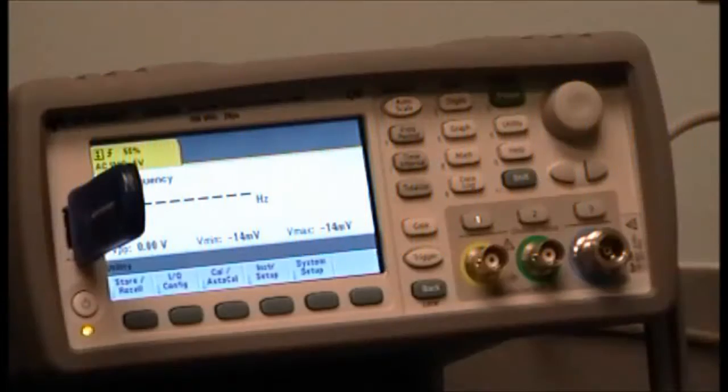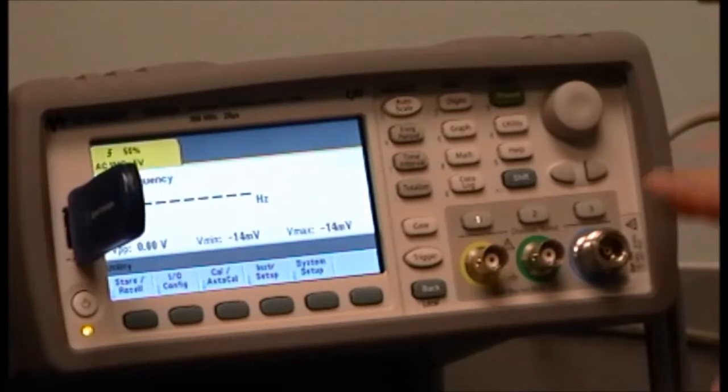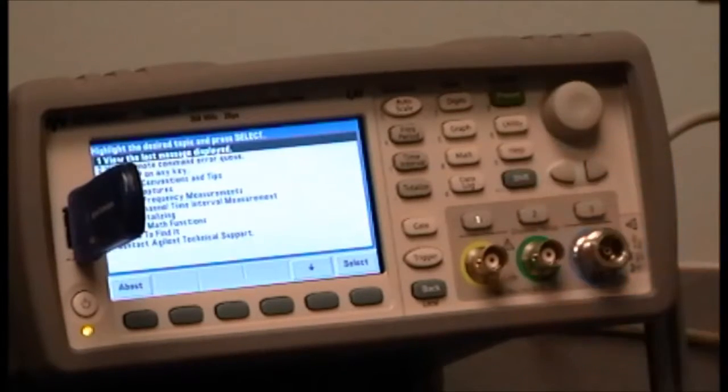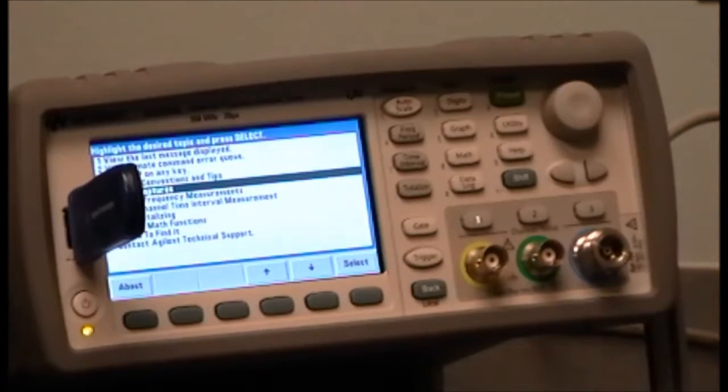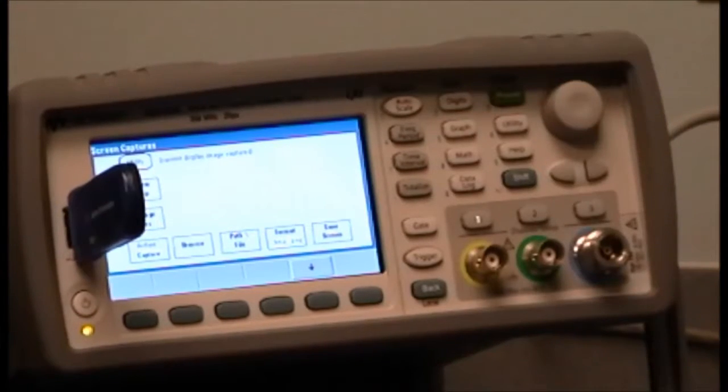You can also find these instructions in the counter's help file. So push the help button, toggle down to number 5 which is screen captures, hit select and it actually gives you a map of which buttons to press.